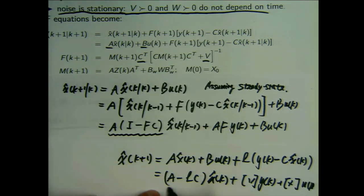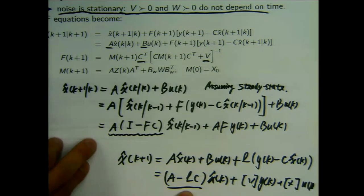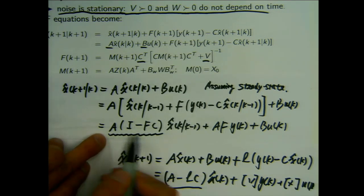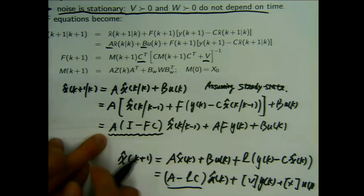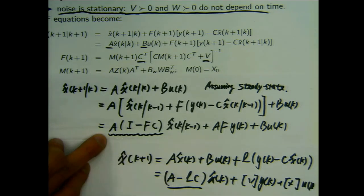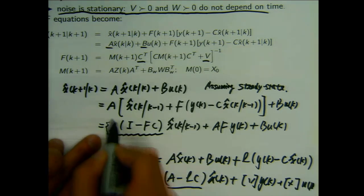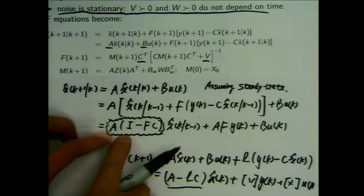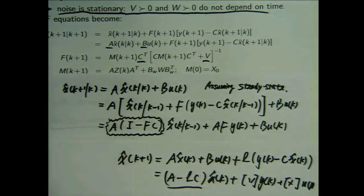In a standard observer design, you have to make the eigenvalue of the closed-loop matrix be inside the unit circle. When we design the Kalman filter, we never designed it based on the dynamics of this matrix — we started from least-squares estimation and derived it. The nice result is that if we do that, this matrix is guaranteed to be stable, meaning the eigenvalues are inside the unit circle.